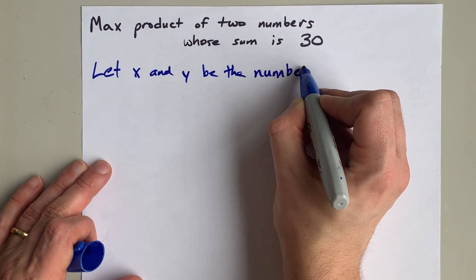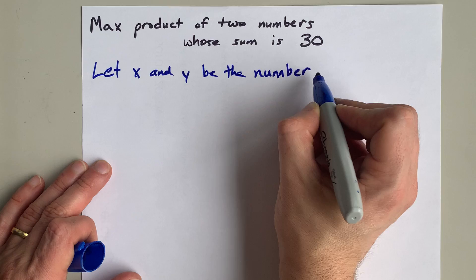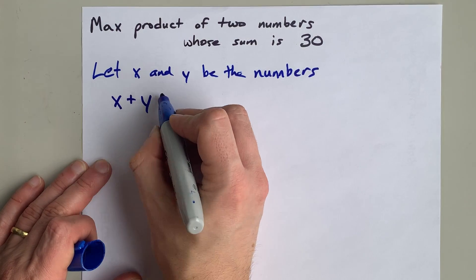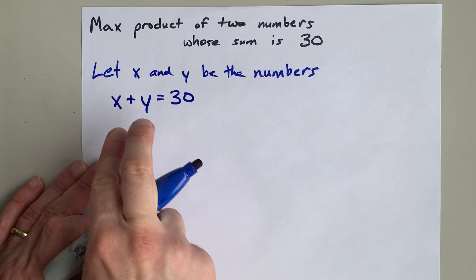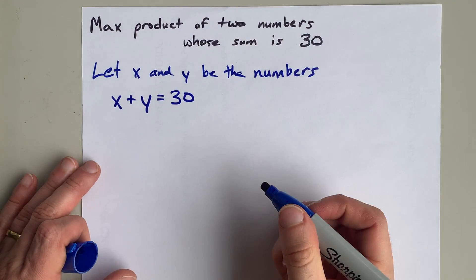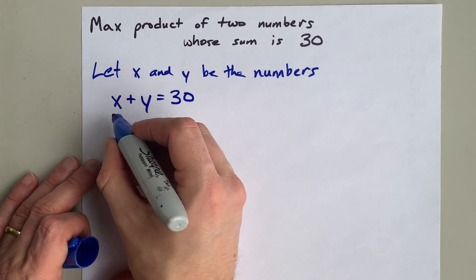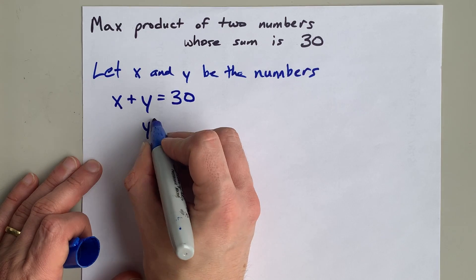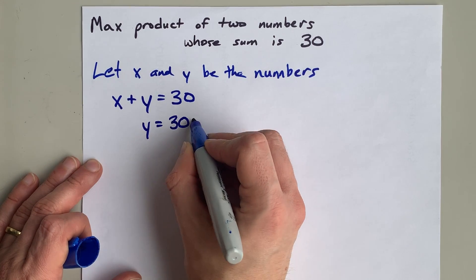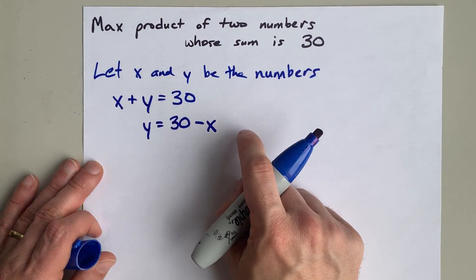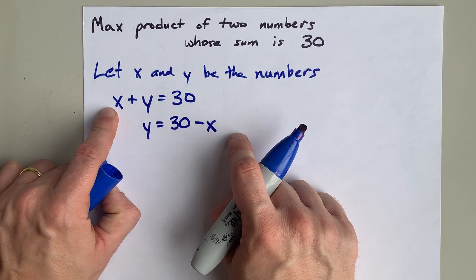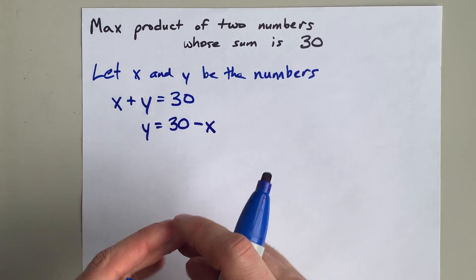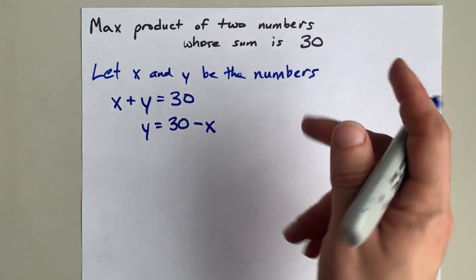x plus y equals 30, because the sum of them is 30. That means putting one of the numbers in terms of the other gives us 30 minus x. So x and 30 minus x are two numbers that will always add to 30.